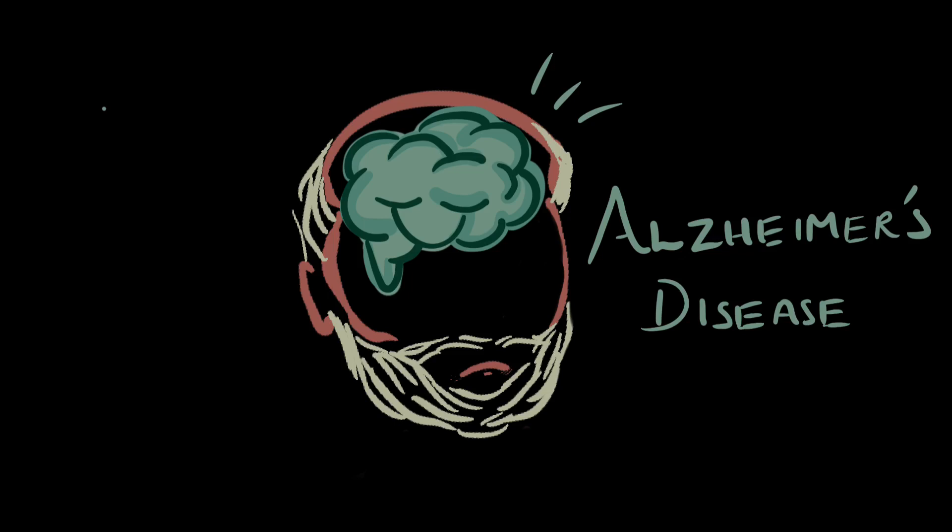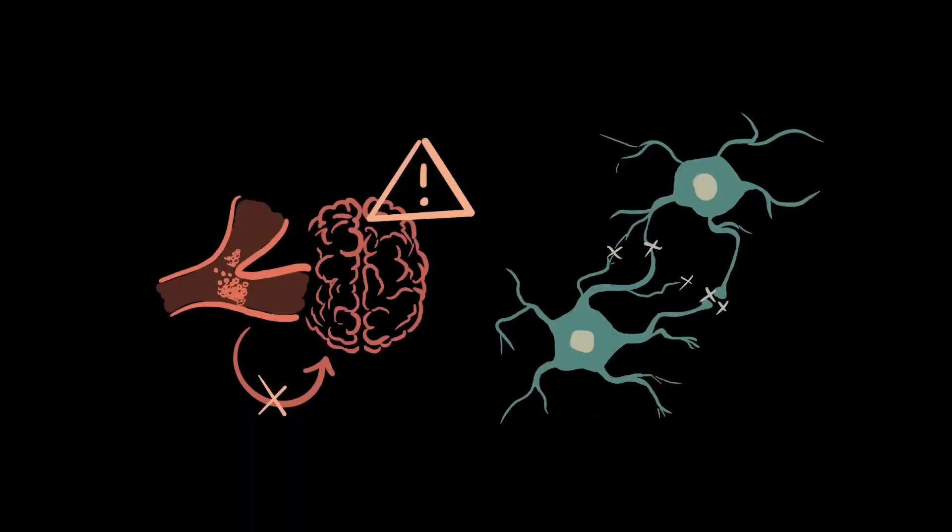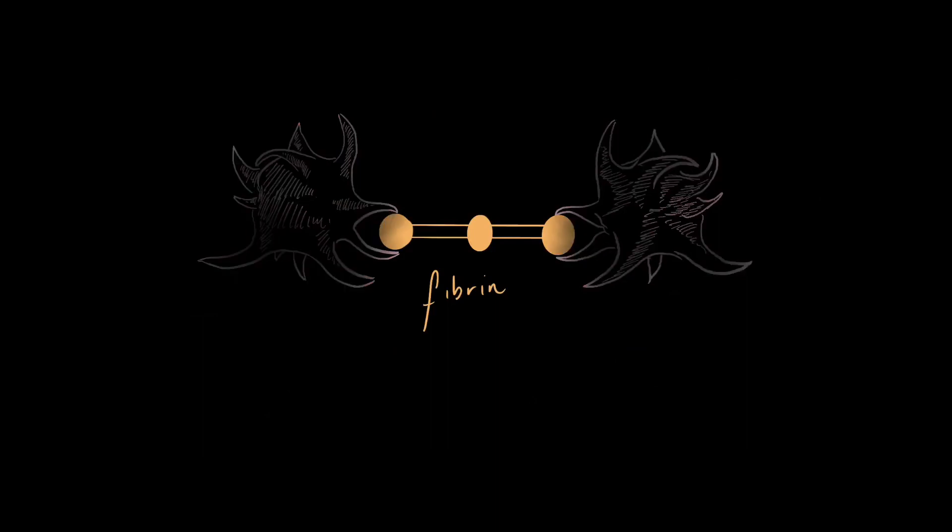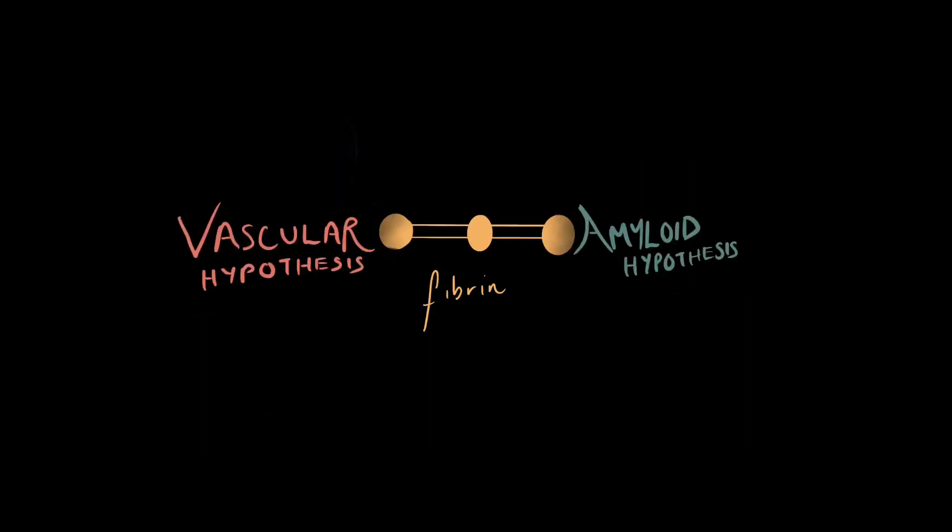For a long time, Alzheimer's disease was very confusing to the scientific community. It seemed to be caused by two very different things, reduced blood flow to the brain and the formation of amyloid beta plaques between brain cells. Just as fibrin bridges adjacent platelets, it might bridge these two very different hypotheses.